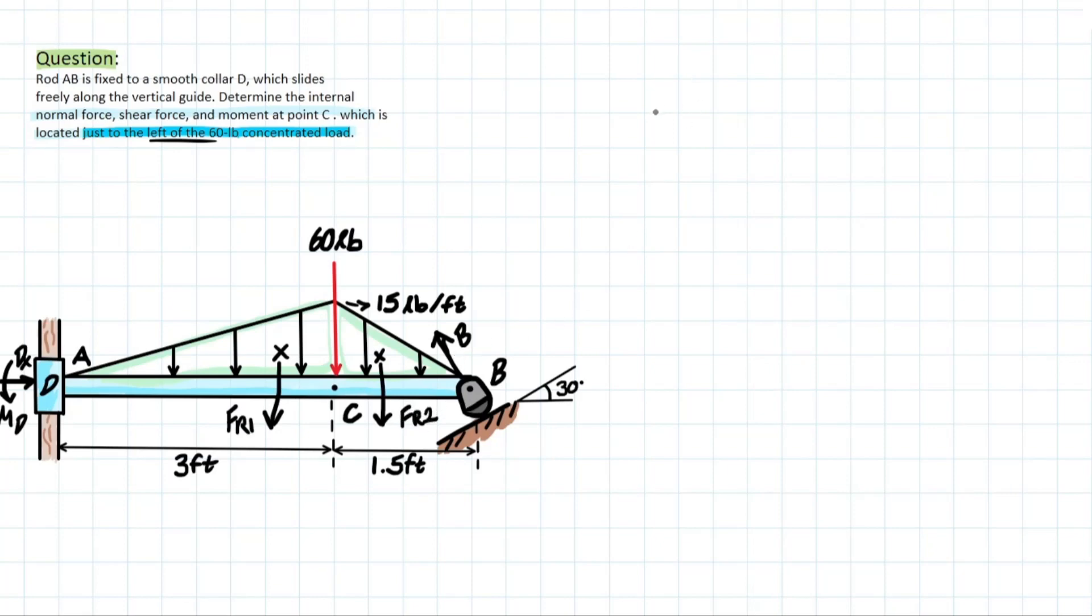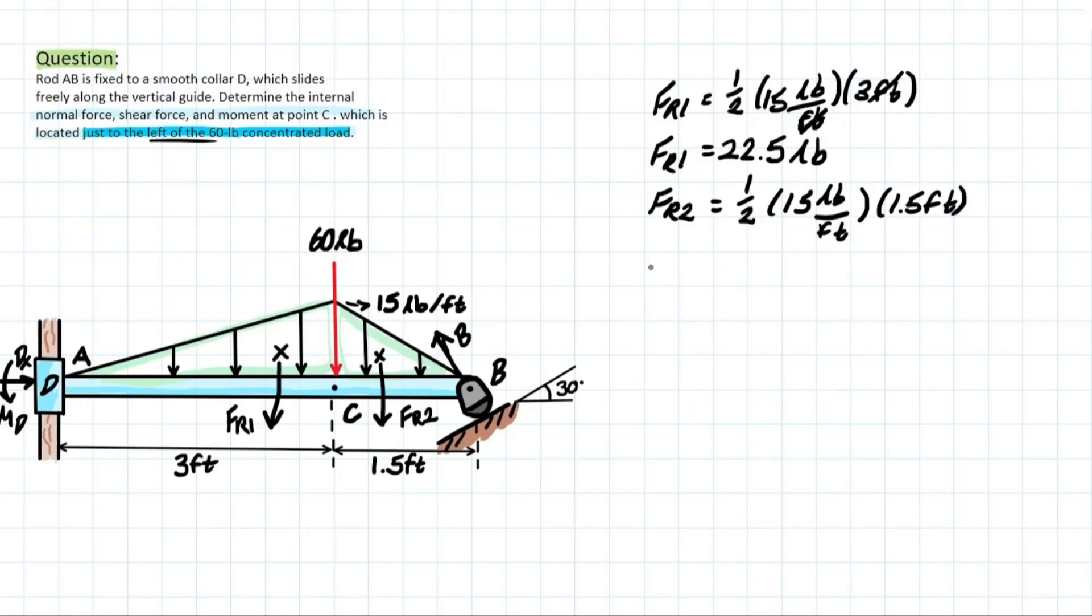And we can solve these pretty quickly and take FR1 is equal to 1.5. The height of that distributed load, which is 15 pounds per feet. And then that is going to be over the span, which is 3 feet. The feet cancel out, and that leaves us with FR1 equal to 22.5 pounds. And then similarly, we can do the same for FR2, where we have one half, also 15 pounds per foot. And that is going to be 1.5 feet here. Meaning that this answer is going to be half of what we solved for before, which is 11.25 pounds.